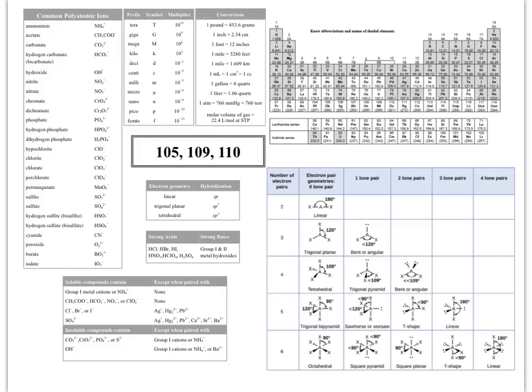On the screen are the things that you specifically have to memorize for CHM105, 109, and 110. Regardless, these are things that you have to commit to memory. For this video, since we're talking about nomenclature, naming of ionic compounds, this region